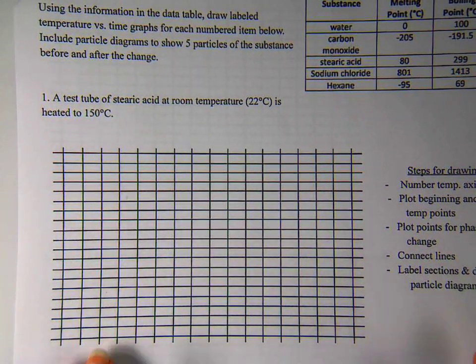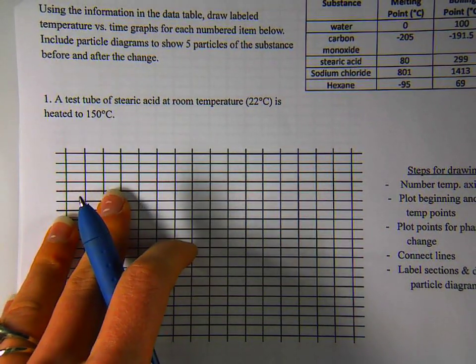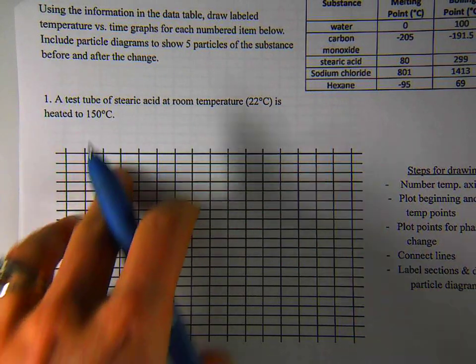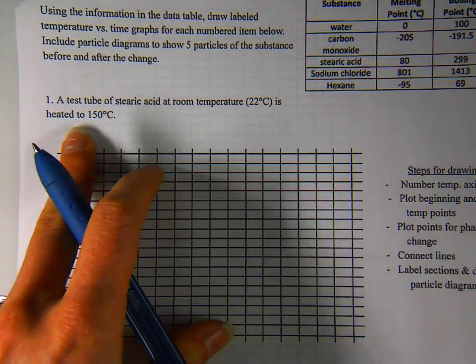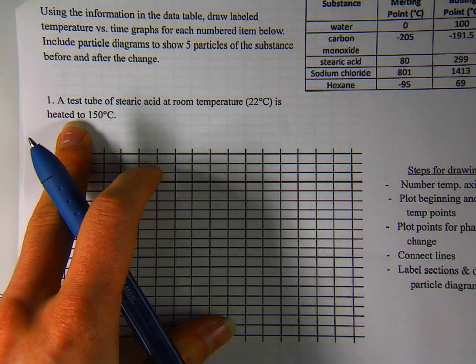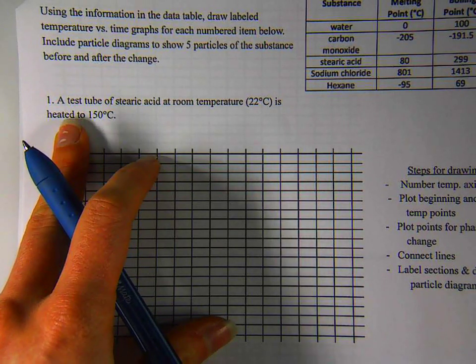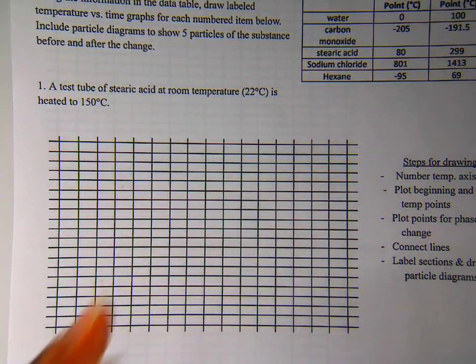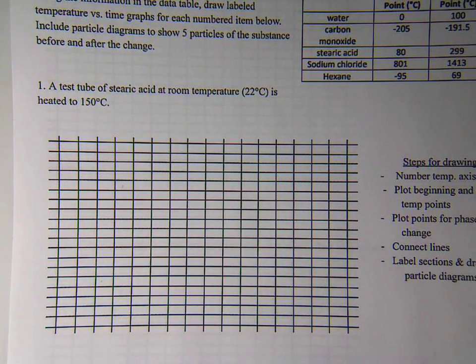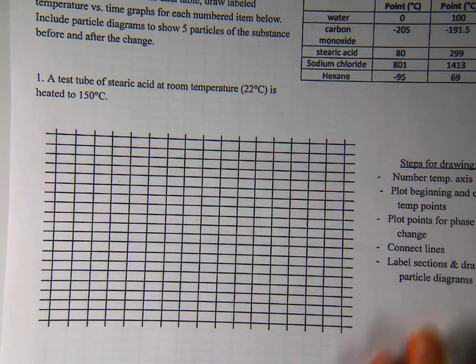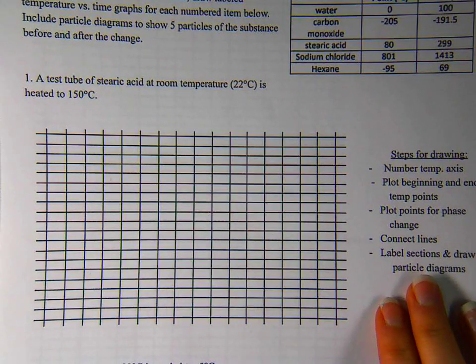So we are going to start with stearic acid. It looks like a white powdery substance at room temperature, 22 degrees Celsius. And we're heating it to 150 degrees Celsius. If you were to carry out this experiment, what would the graph of temperature versus time look like? You're probably thinking this is a lot. I don't know where to begin.